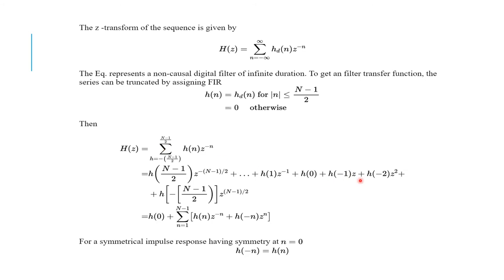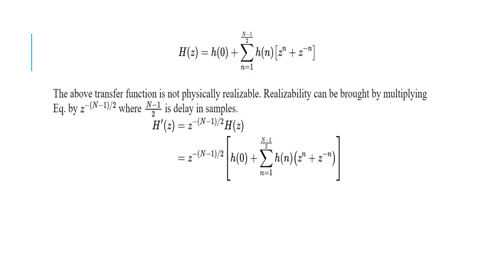We expand the sequence and bring out h(0) since it has no z term. The remaining terms are written with a summation from n = 1 to (N−1)/2 of h(n)·z^(−n) + h(−n)·z^n. For a symmetrical impulse response, the symmetry condition h(−n) = h(n) is applied. The z-transform then becomes: h(z) = h(0) + summation from n = 1 to (N−1)/2 of h(n) · [z^n + z^(−n)].